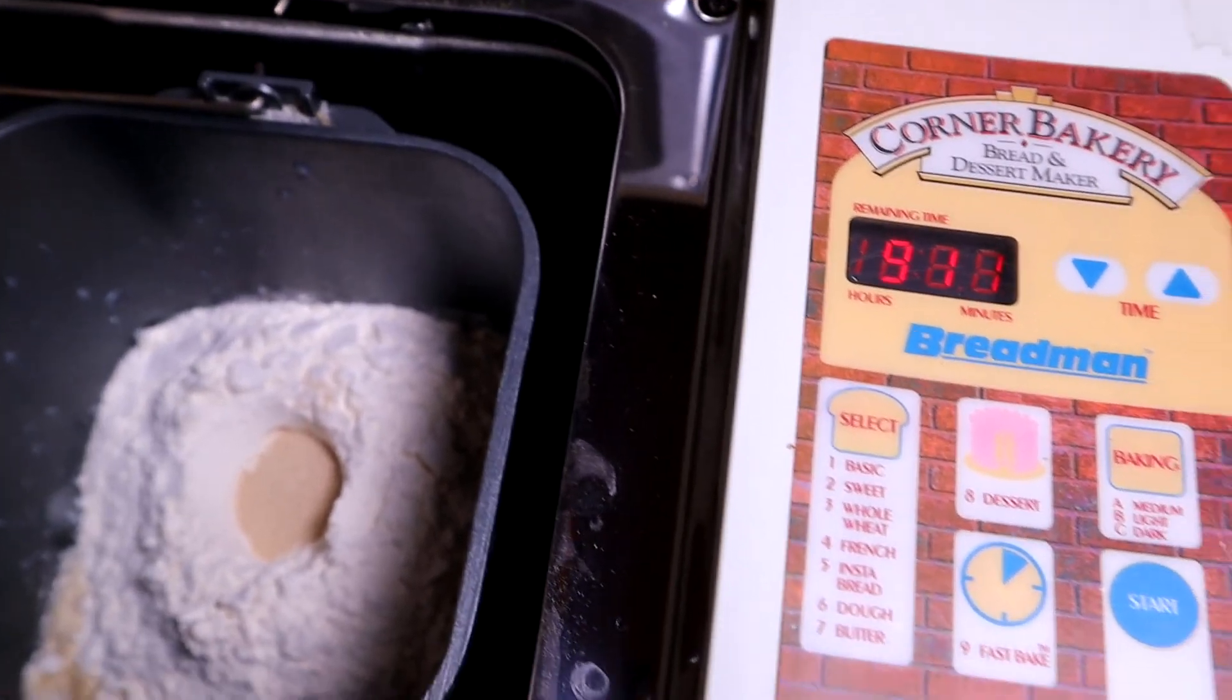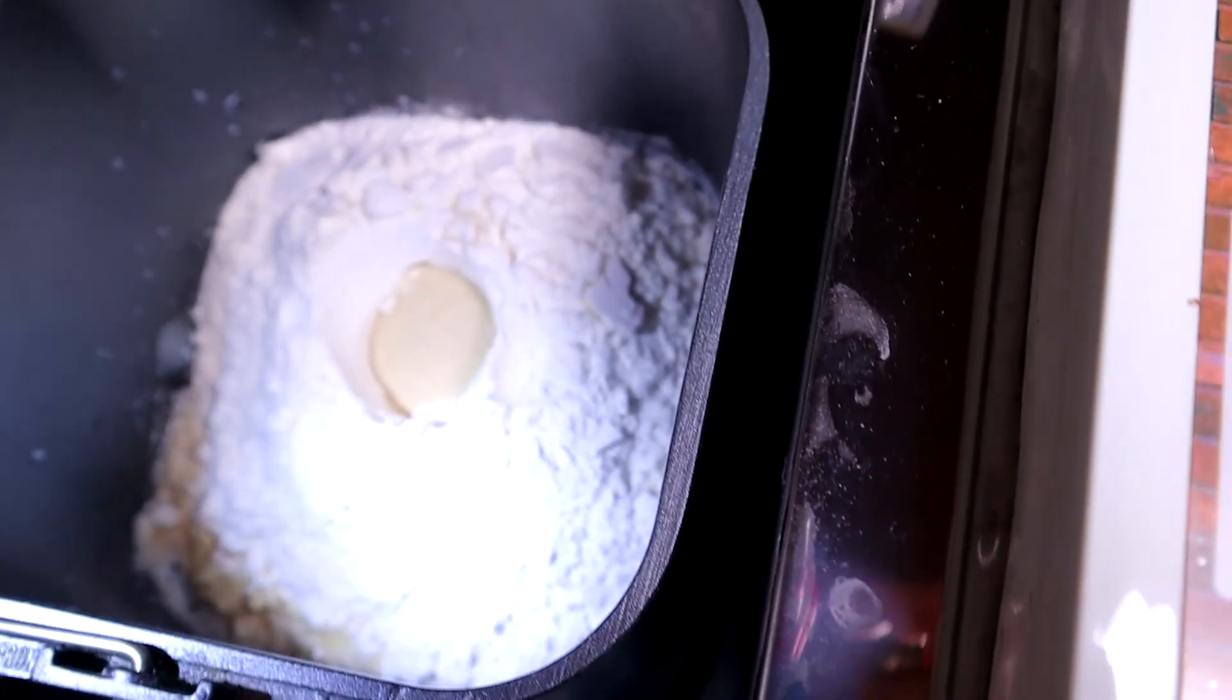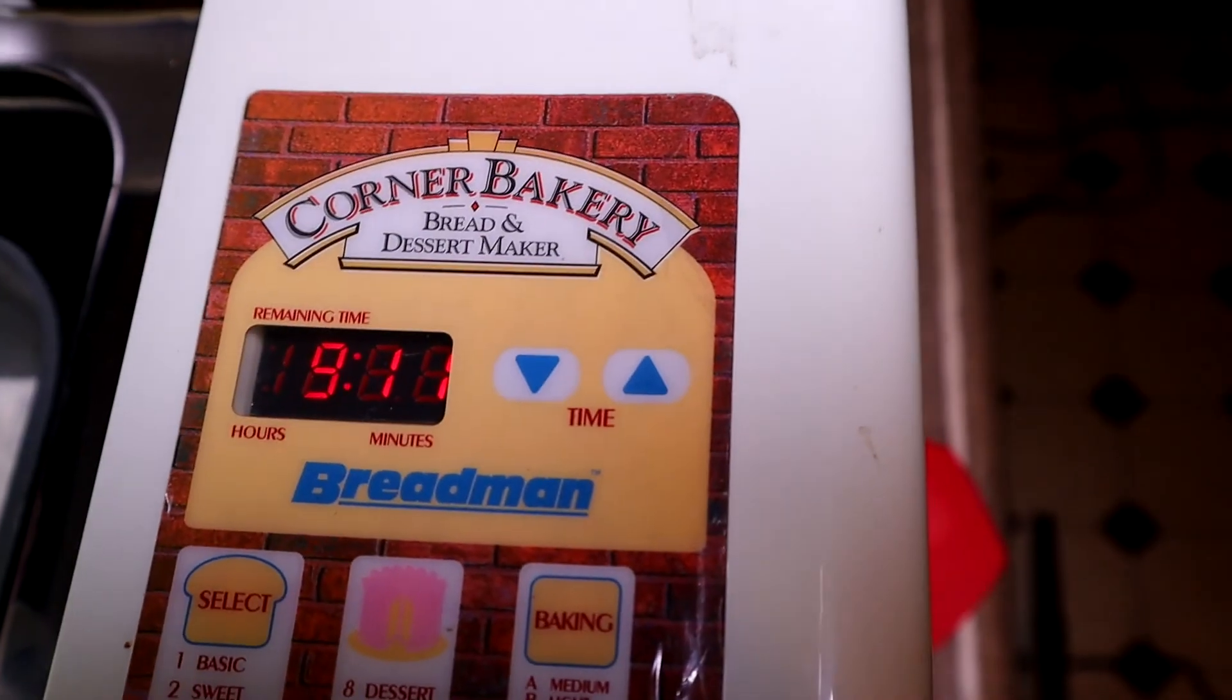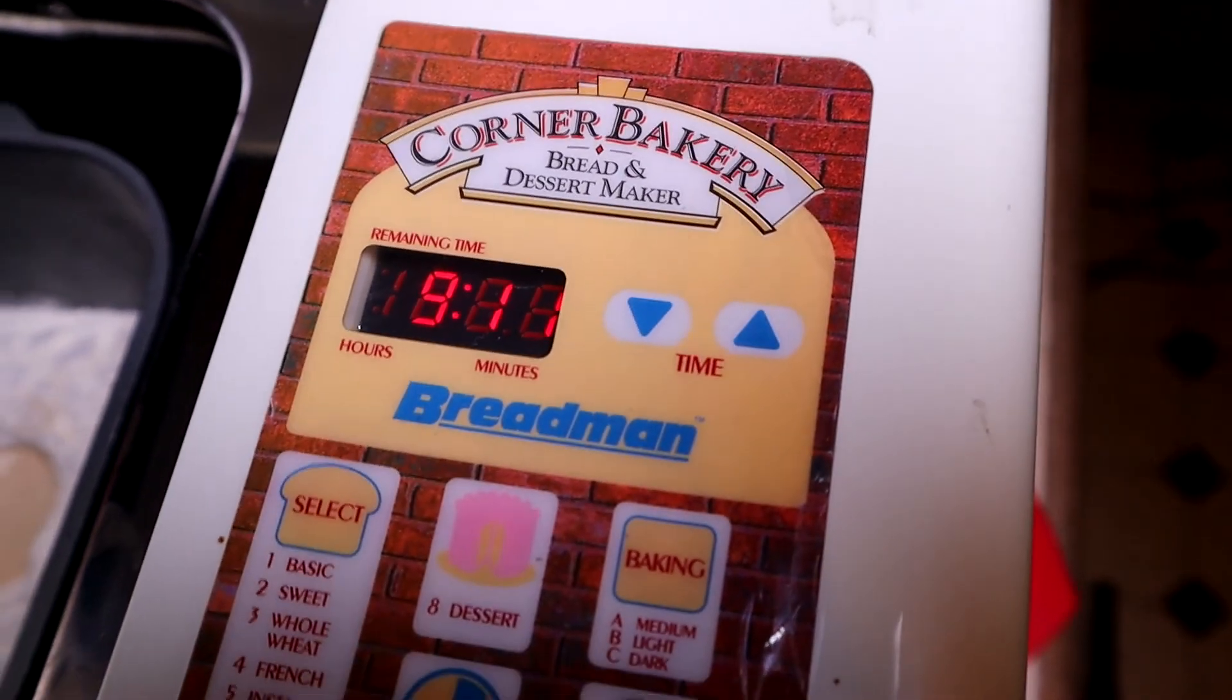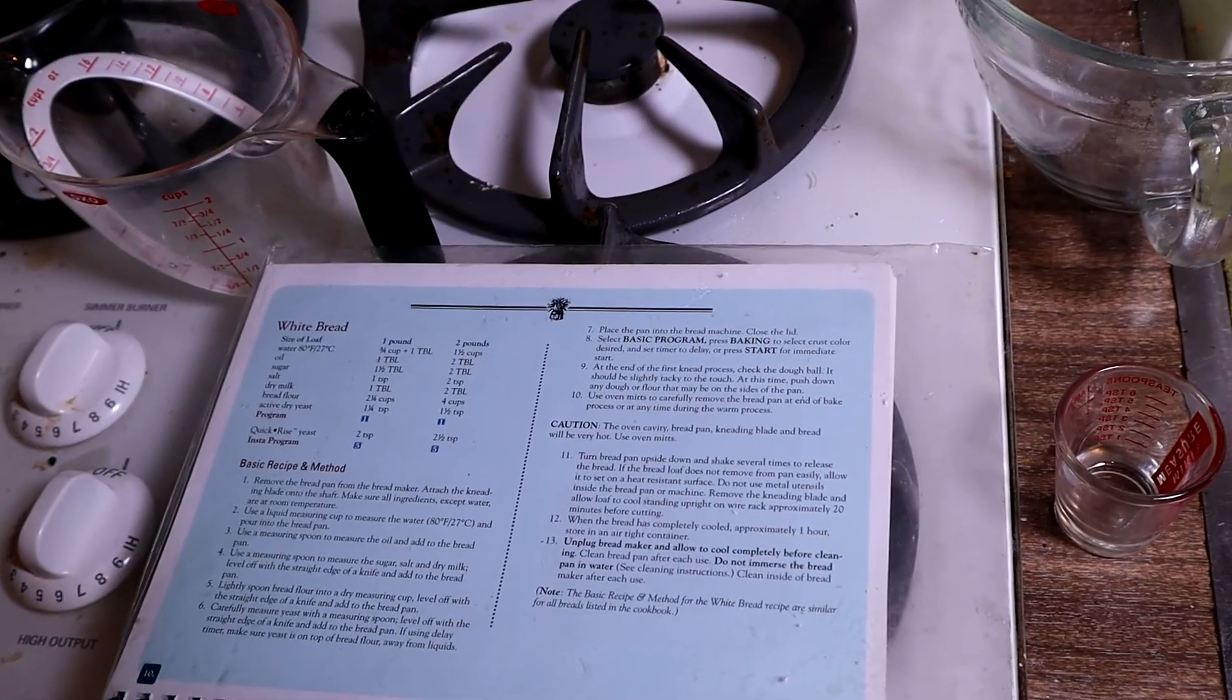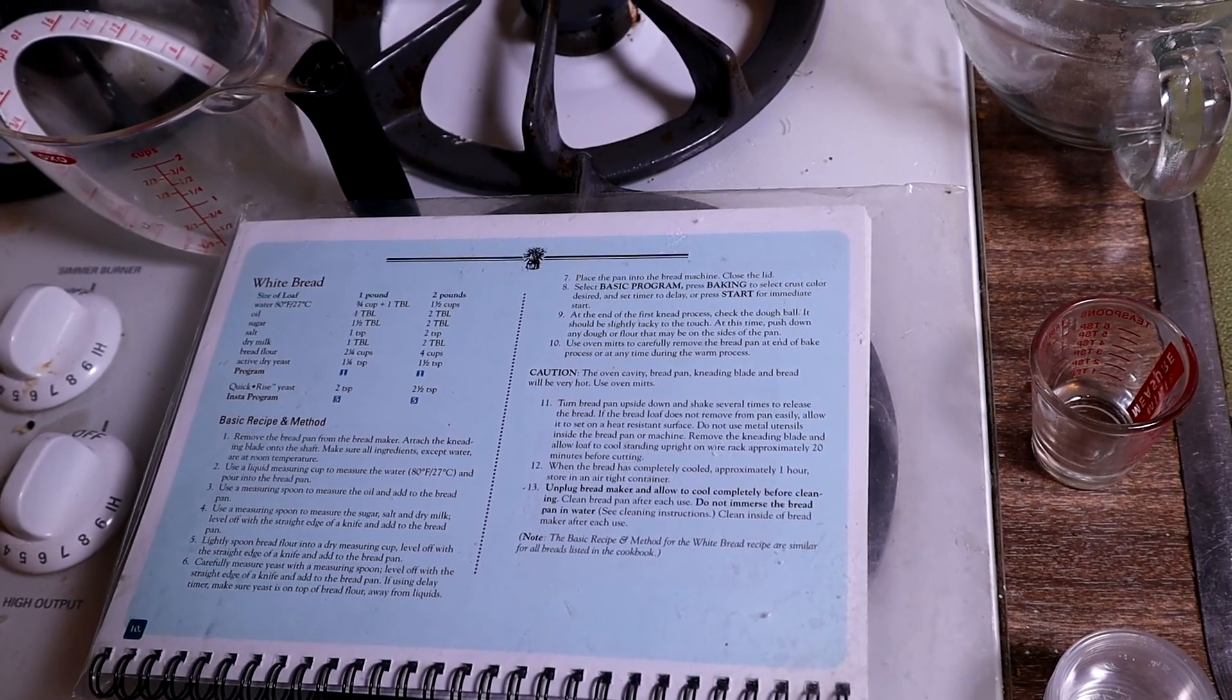When we come back we should have bread. Right in the center there's the yeast volcano. There's the flour. And underneath is all the wet ingredients. Here's the timer. And tomorrow we come back to bread. Hopefully. Wish us luck. All right, Corner Bakery. Here's our manual. Two pound loaf. This is what we're making.